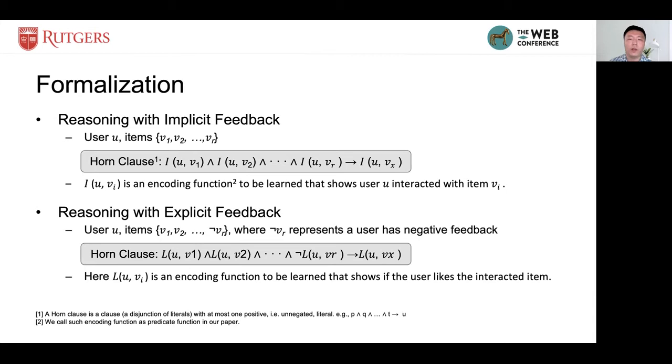For reasoning with explicit feedback, we allow the user to express their preferences about interactions as positive or negative. Here, we add a negation operation before each interaction to represent a negative feedback from a user towards an interactive item.